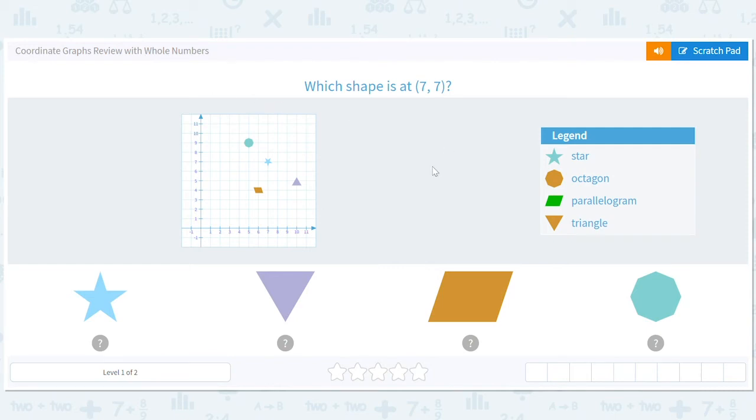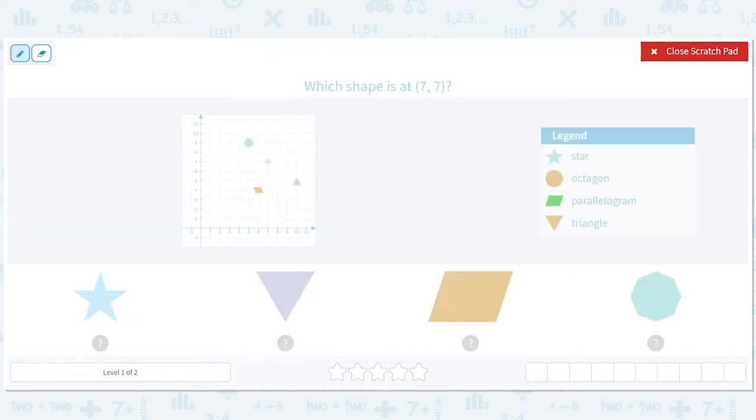Coordinate graphs review with whole numbers. This is such a fun lesson because all we have to do is use the x-coordinate of seven and the y-coordinate of seven. We go to (7,7) and find what shape this is. It looks like a star. Which shape is at seven, seven? The star.